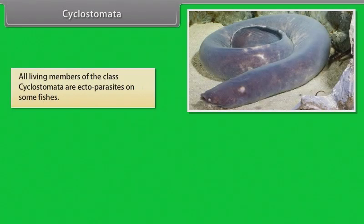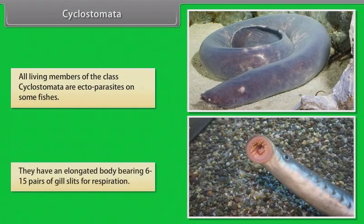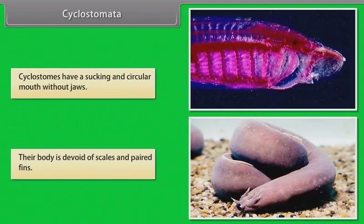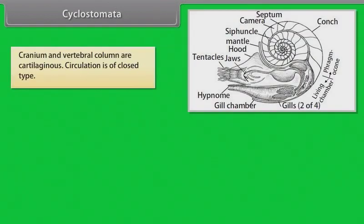Cyclostomata. All living members of class Cyclostomata are ectoparasites on some fishes. They have an elongated body bearing six to fifteen pairs of gill slits for respiration. Cyclostomes have a sucking and circular mouth without jaws. Their body is devoid of scales and paired fins. Cranium and vertebral column are cartilaginous. Circulation is of closed type.